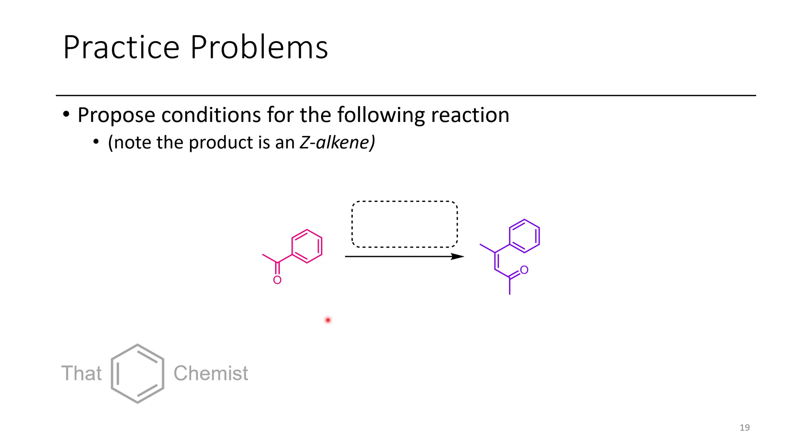Now, in the next problem, I want you to convert acetophenone to this alpha-beta unsaturated ketone using some sort of reaction. There's many options here, but given that we want the Z-alkene as the product, you're going to need to choose conditions that should favor the formation of a Z-alkene.